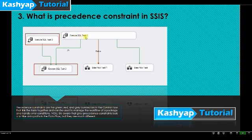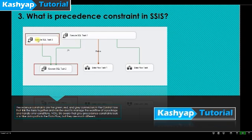As shown in the image, the Execute SQL Task has three precedence constraints — one green and one red. If the task succeeds, the green line leads to Task 2; if it fails, the red line leads to Data Flow Task 1. Task 3 accepts input from two sources — Task 1 and another task — and if successful, proceeds to Task 2. This is the concept of precedence constraints in SSIS.